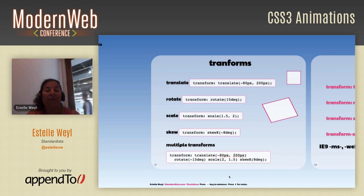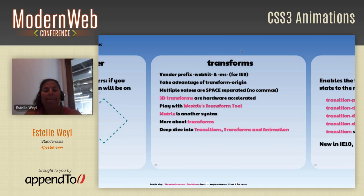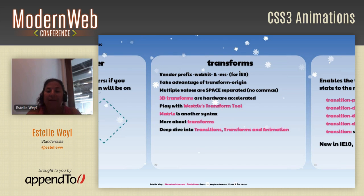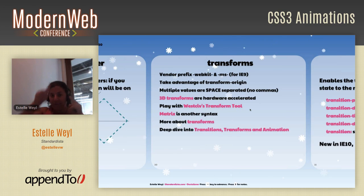A few things to note: you still need a -webkit- vendor prefix for transforms, and IE9 needs -ms-. Use transform-origin strategically — when you saw the snowflakes coming down in what appeared to be random paths rather than straight lines, that's because I changed the transform-origin for each one. Each snowflake rotates around a different external point, so instead of spinning in place, they drift sideways as they fall.